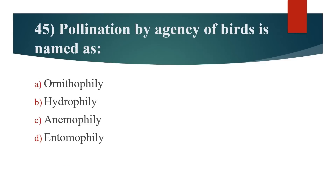45th question: Pollination by agency of birds is named as? Option A: Ornithophily. Option B: Hydrophily. Option C: Anemophily. Option D: Entomophily. Answer is Option A: Ornithophily.